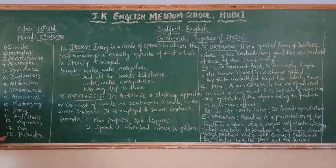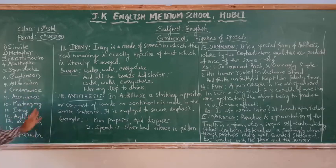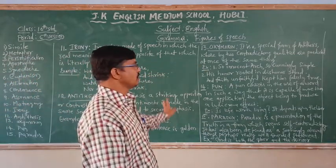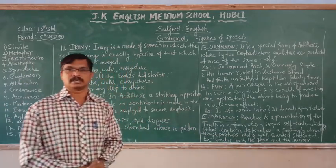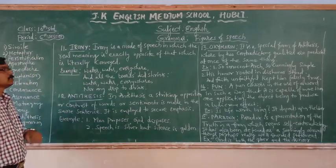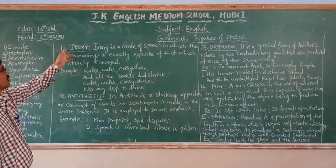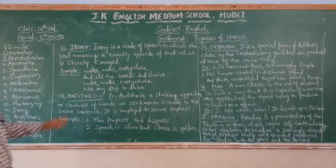Today, from 11 to 15: number 11 is irony, twelve is antithesis, thirteen is oxymoron, fourteen is pun, and fifteen is paradox. These five types of figures of speech we will learn in this session. So take care and write down this part carefully. Now, this is the 11th type of figure of speech — irony.